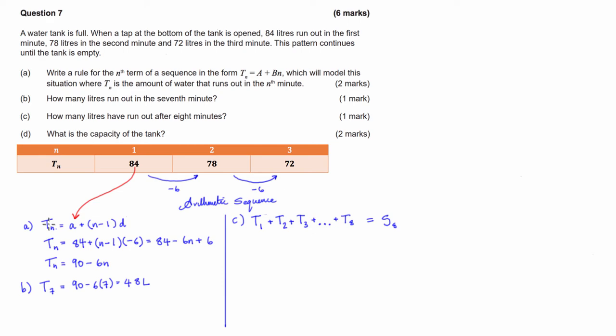Now we have a formula, like we did for t_n. We have a formula for S_n. The sum of n terms equals n divided by 2 times (2 times the first term plus (n - 1) times our common difference). So for part C, all I'm going to do is substitute in all of the numbers I know. So the sum of the first 8 terms equals 8 divided by 2 multiplied by (2 times 84 plus (8 - 1) times our common difference).